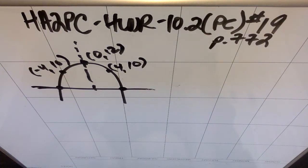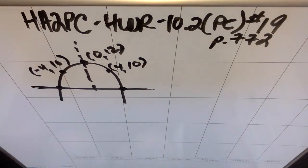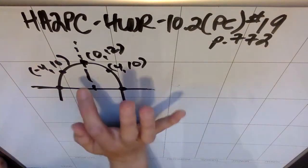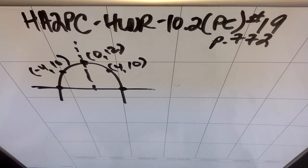A parabolic archway is 12 meters high at the vertex. At a height of 10 meters, the width of the archway is 8 meters, meaning it's 4 on this side and 4 on this side. The question says, how wide is the archway at ground level?